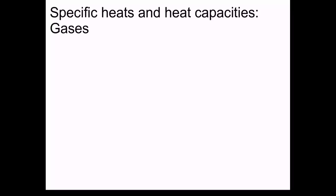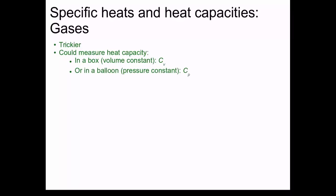Moving on to gases, things get a little bit trickier. It turns out that we could measure the specific heat of a gas in one of two ways. We could either measure it in a box, which means the volume is constant, in which case we specify it C sub V. Or we could measure it in a balloon, in which case the pressure is constant. We call that C sub P.